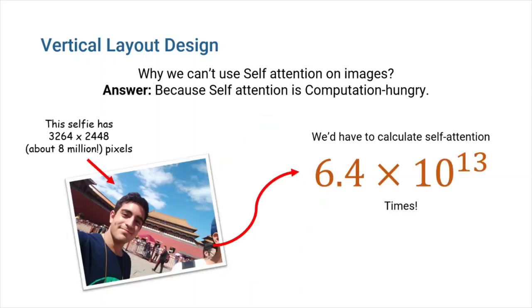If we want to calculate self-attention weights in an image, we should calculate an attention weight for each possible pair of pixels. Which means, for an ordinary selfie like one you can see here, which has about 8 million pixels, we should calculate more than 60 trillion attention weights.